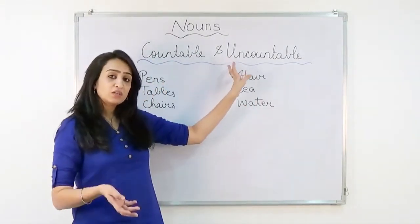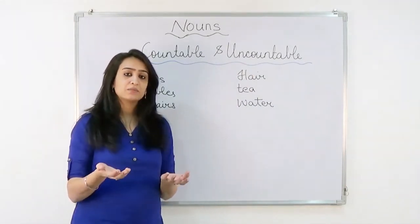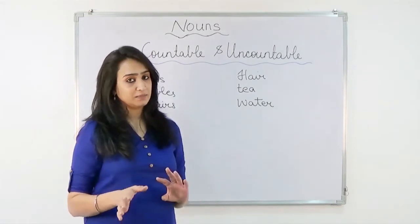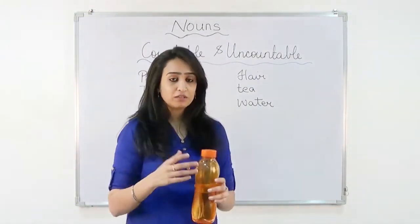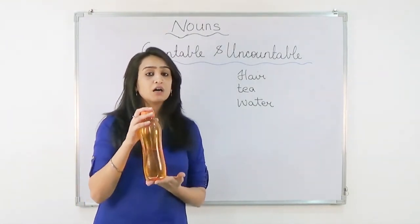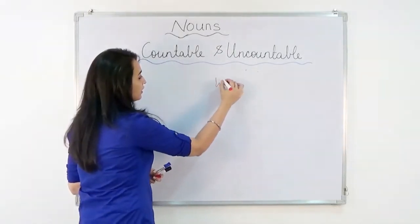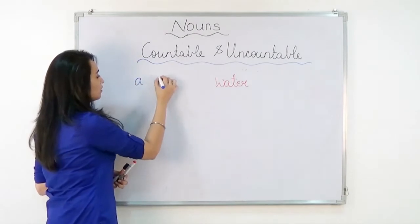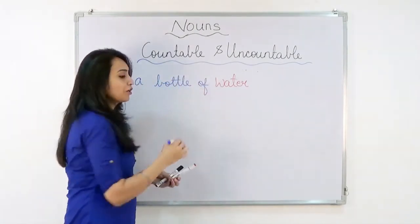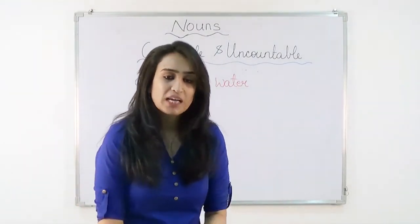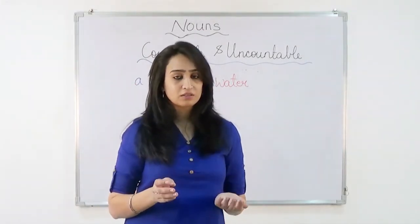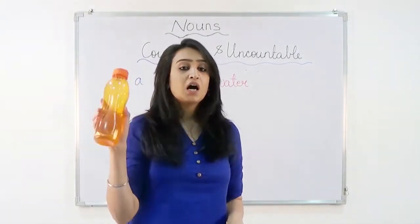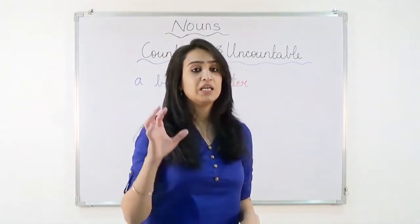Now if we can't count the uncountable noun, then how do we tell the other person how much we need? For that we have a special mechanism. We can't count water, but we can put it in a bottle and say 'a bottle of water.' So when you are sitting in a restaurant and you ask the waiter, you can't just say 'get water' — that's wrong. You have to specifically tell him: get me a bottle of water, or get me a glass of water.